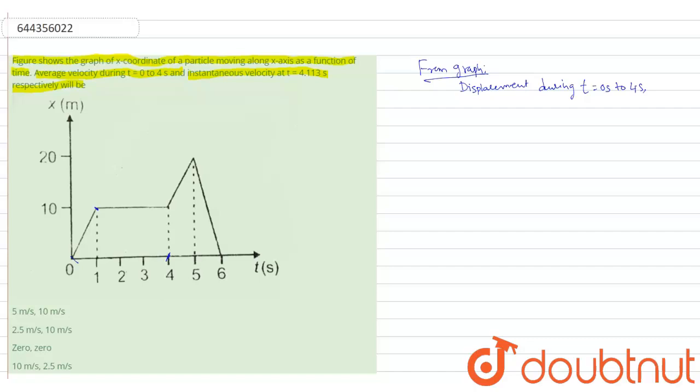So now the displacement during t equal to 0 to 4 seconds is 10 meters. Now we have to find the average velocity during t equal to 0 to 4 seconds. So now v average is equal to the displacement in 0 to 4 seconds, which is 10 meters, divided by time, which is 4 seconds. Now we will get 2.5 meters per second. This is the average velocity.